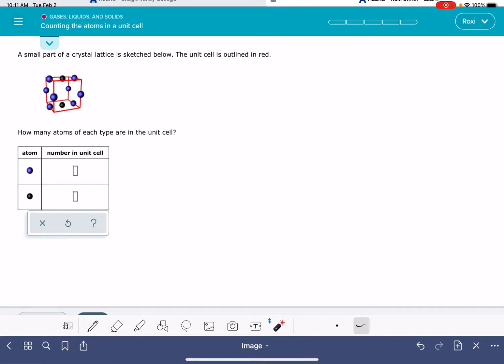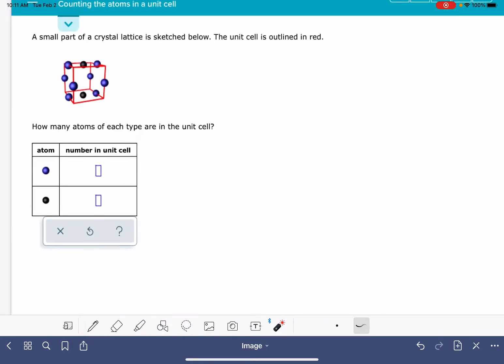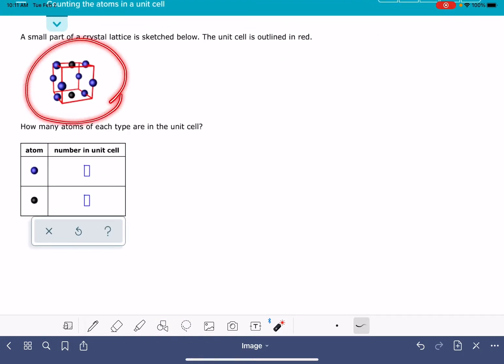In this video I'm going to show you how to solve the problem called counting the atoms in a unit cell. In this problem we're going to get a picture of a unit cell. It's got different atoms color-coded in the picture and then we're asked to figure out how many atoms are actually located inside the unit cell.